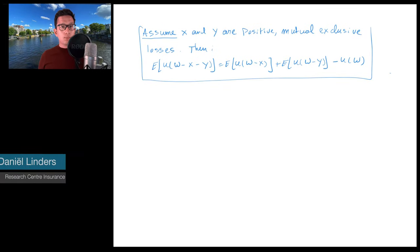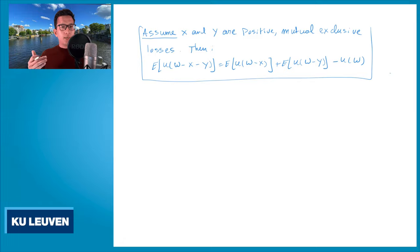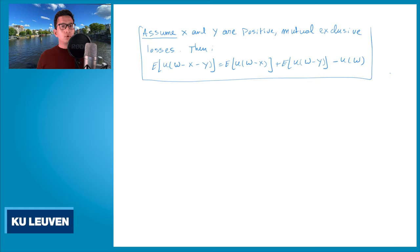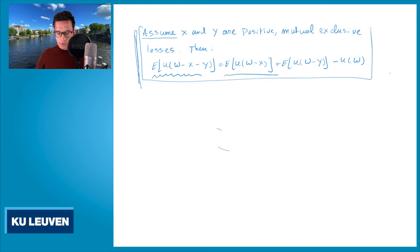We have shown that if you have two random losses x and y and you want to calculate the expected utility after suffering x and suffering y, then this expected utility is additive if we assume that losses x and y are mutually exclusive, and if the expected utility of w, u(w), is equal to zero. In case u(w) is not equal to zero, you can use the same proof to show that the expected utility after you suffer x and y is the expected utility of x plus the expected utility of y minus u(w).